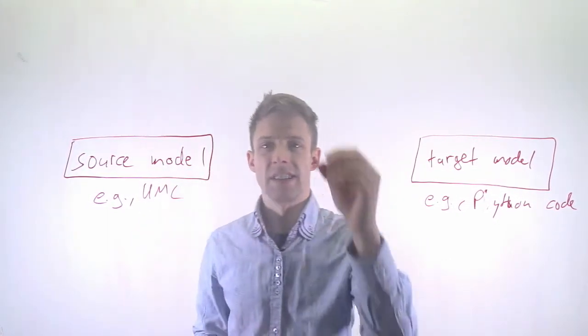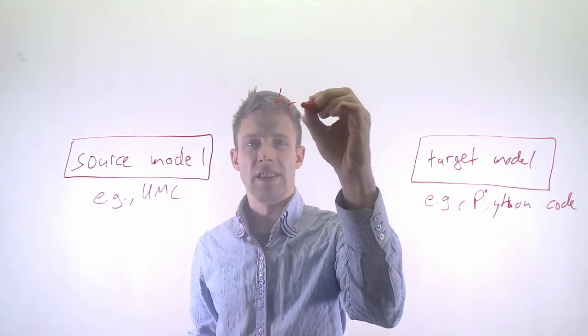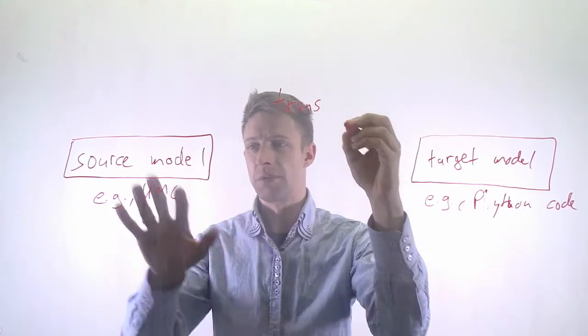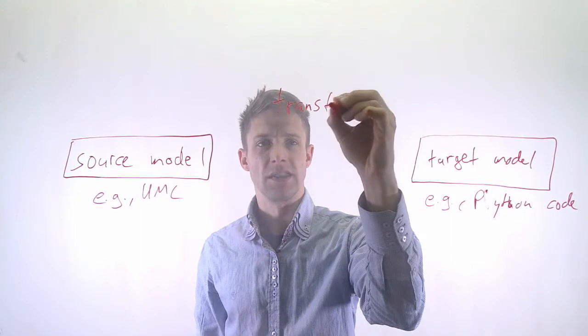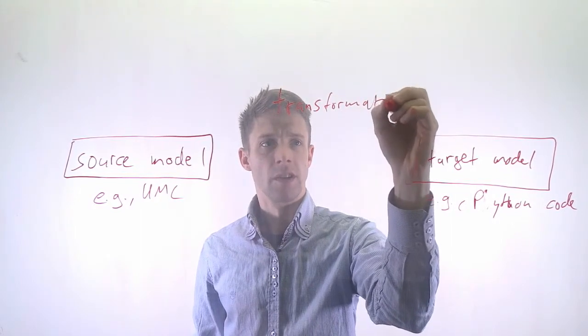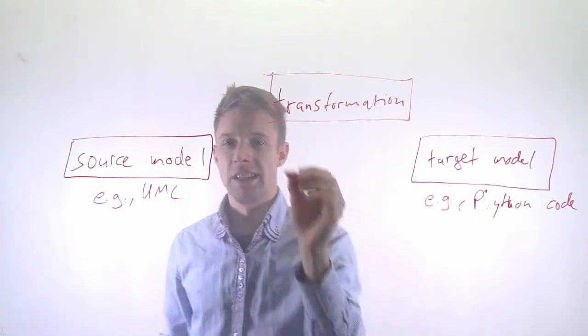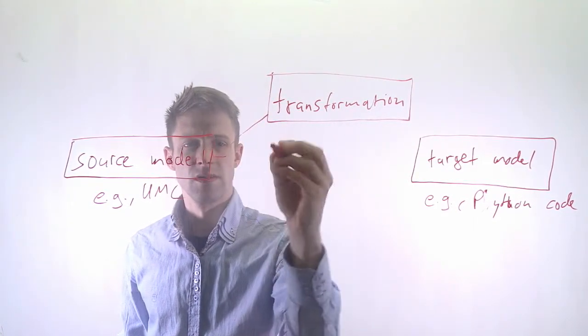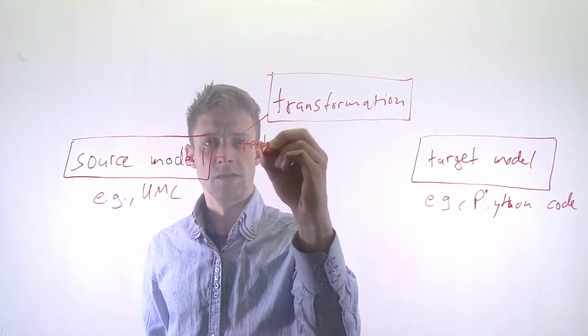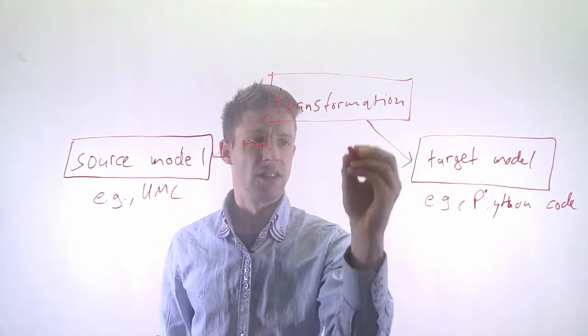Now, we have already discussed that what we have that does this, that transforms source model into target model is a transformation, which basically reads this and creates the target model.